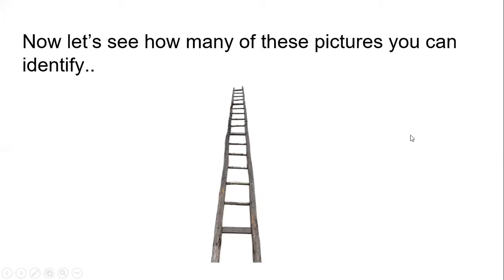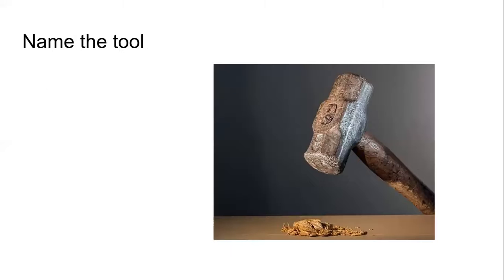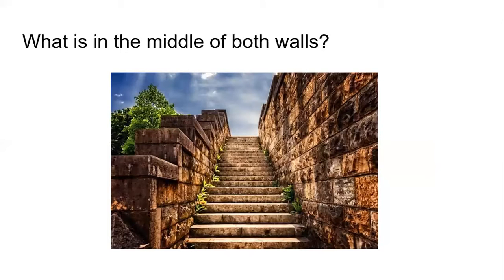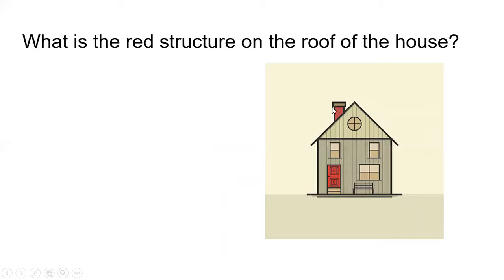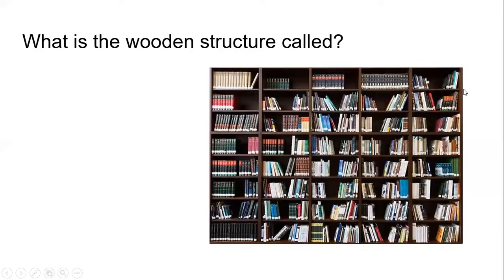Now let's see how many of these pictures you can identify. What is this? It is a ladder. What about this? Name the tool — it is a hammer. What's this in the middle of both walls? Stairs. And what is this red structure on the roof of the house? A chimney. What's the wooden structure called where the books are kept? A bookshelf.